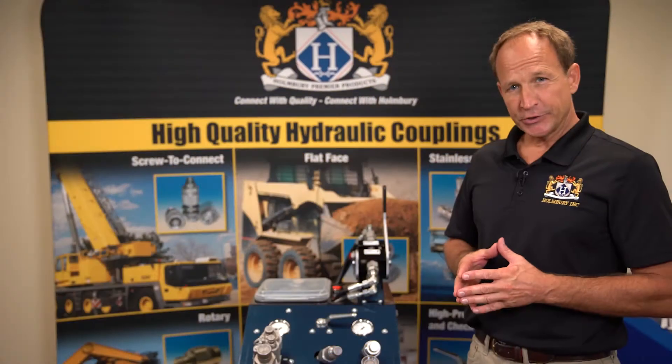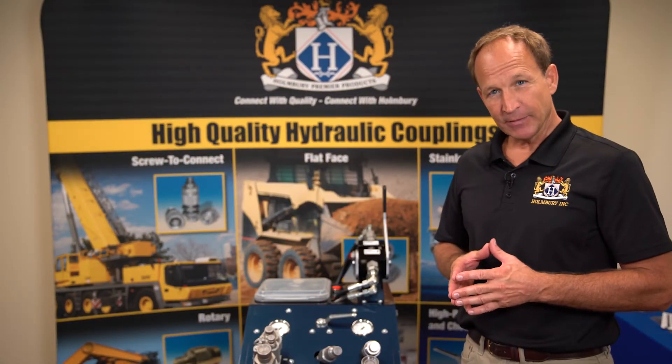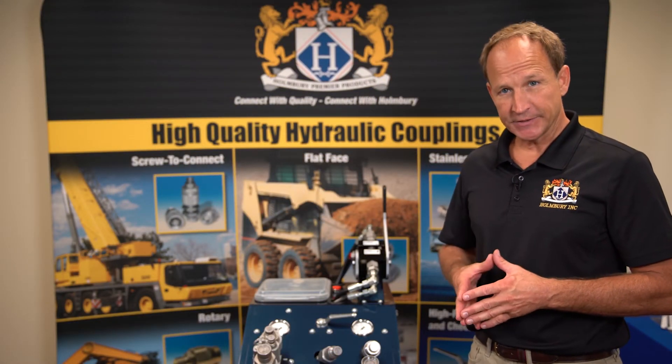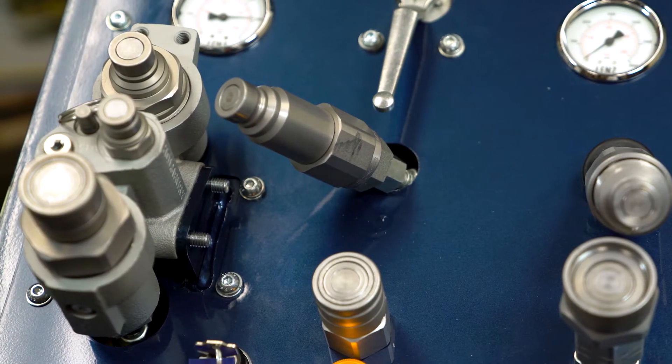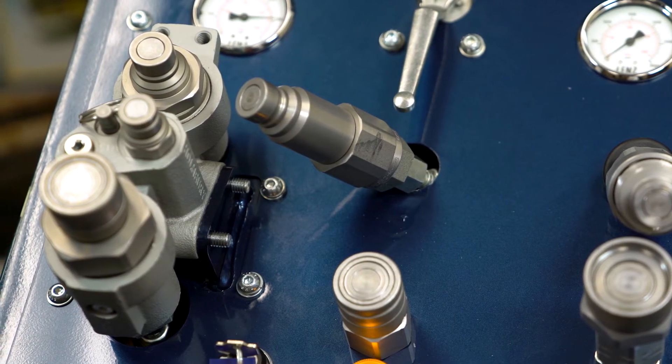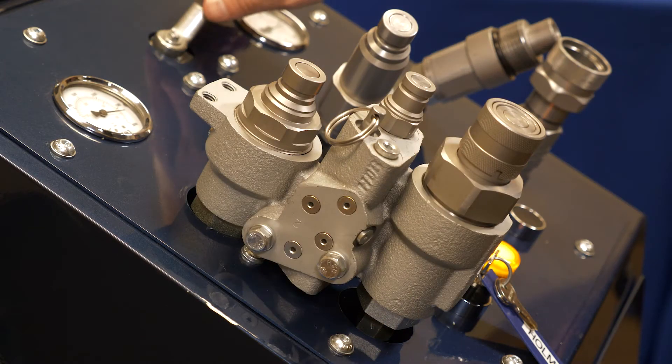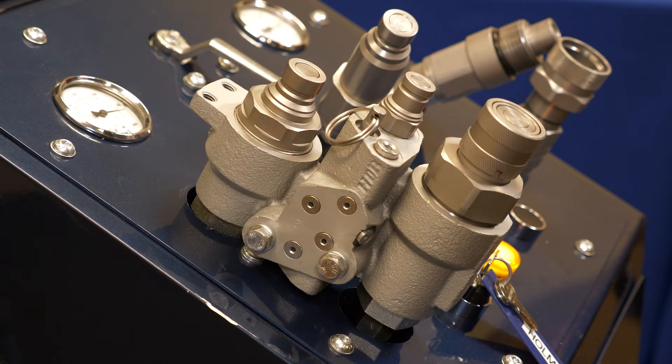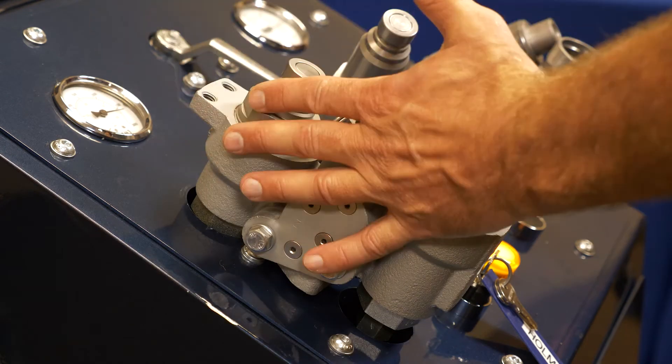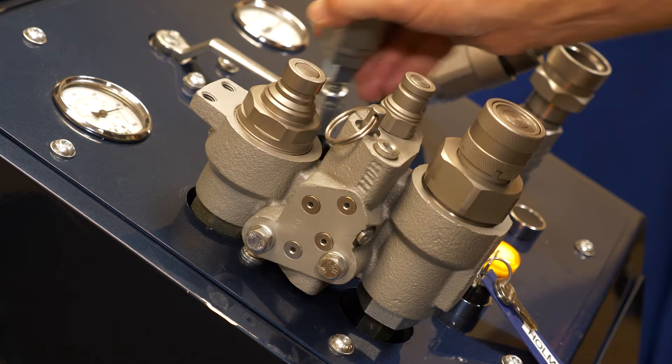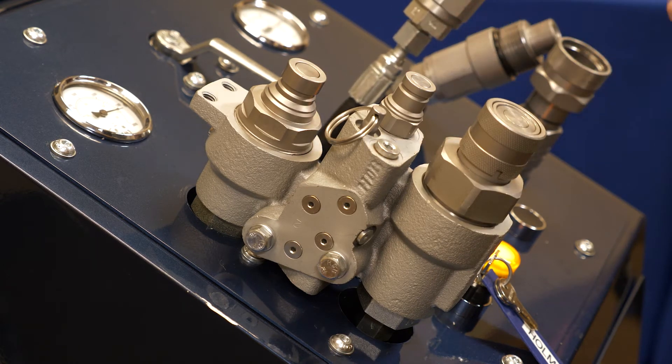The third product family we want to show is our HBD, or decompression block, which is typically mounted on a skid loader. We're going to put pressure on both the male side and the block valve side. When using our decompression block, the first thing we want to do is to pull the pin on the block valve to take the pressure away from the skid loader.